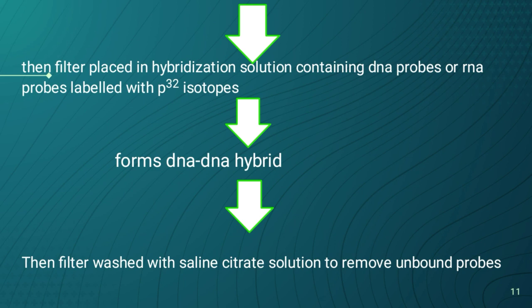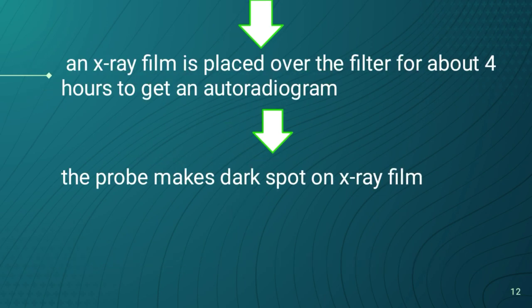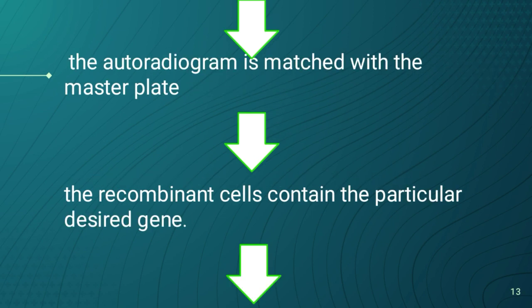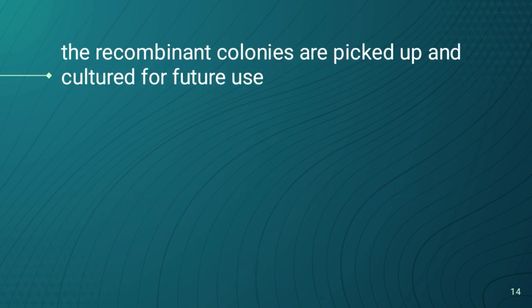The filter paper is washed with saline citrate solution to remove unbound probes. An X-ray film is placed over the filter for 4 hours to get an autoradiogram. The probes make a dark spot on the X-ray film. The autoradiogram is matched with the master plate, and recombinant cells containing particular desired genes are identified. The recombinant colonies are then picked up and used for further use.